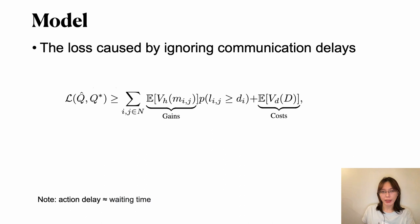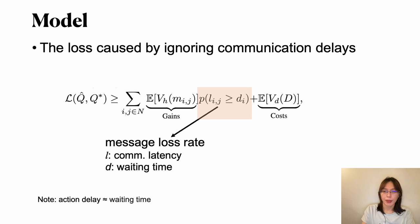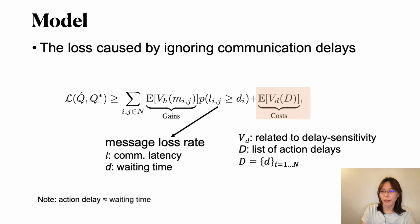We also analyze the loss caused by ignoring communication delays by derivation. Here is the function that loss is related to three parts. The first one is the gains of message sharing. The second one is the packet or message loss rate. L here is the delay in communication latency, and D here is the waiting time of the agent. And the other part is the cost of delays, which is related to delay sensitivity. It's a feature of the task. Here we estimate action delays to waiting time. And here we ignore the other part of delays, such as the processing of neural networks. Because compared with communication delays, it can be ignored.